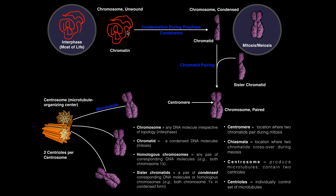Now suppose we're a cell and we want to divide and undergo mitosis. That chromosome has to condense up and it forms this structure called a chromatid. A chromatid is simply a condensed DNA molecule that we see during cell division or mitosis. So is a chromatid a chromosome? Yes — a chromosome is any DNA molecule regardless of shape. So chromosome is a very general term; chromatin refers to the form when it's unwound during interphase; and chromatid refers to the form when it's condensed during mitosis or meiosis.